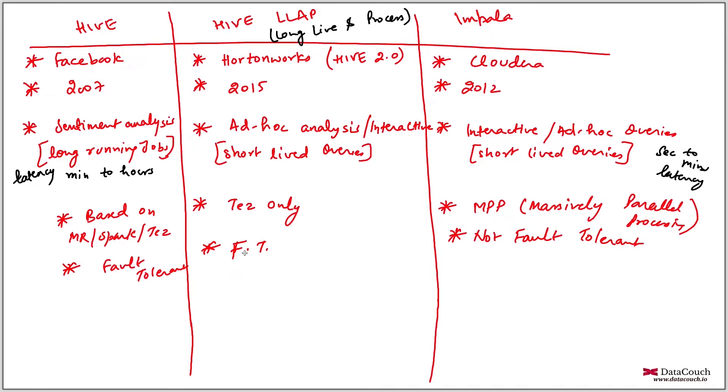So once the query is failed in between, there will be retry of tasks because there are mapper tasks, Tez tasks, so these tasks, YARN containers will be recreated automatically by the framework. We don't have to worry, but in Impala we have to basically think about it.